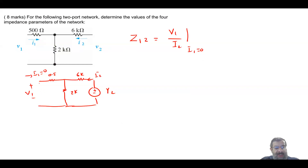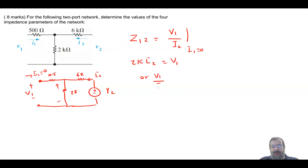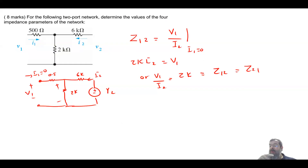v1 is the voltage between those two left terminals, which is the same as the voltage across the 2 kΩ. So v1 = 2k·i2, and v1/i2 = 2 kΩ = z12. Note that z12 and z21 are usually equal to each other.